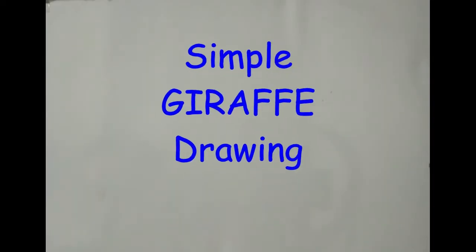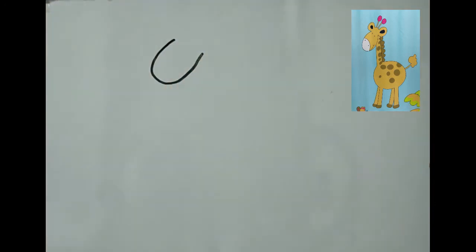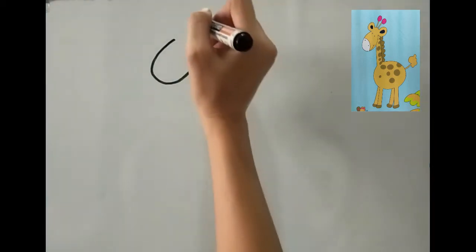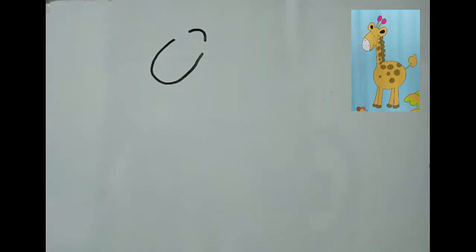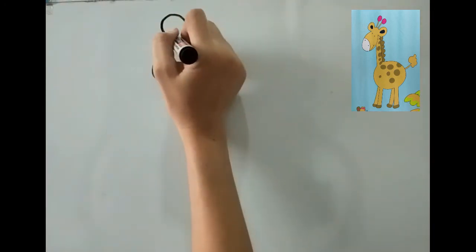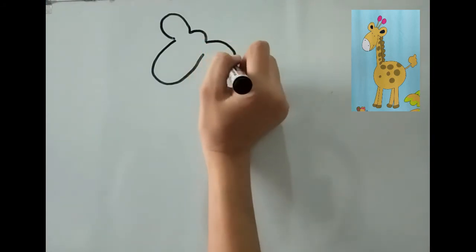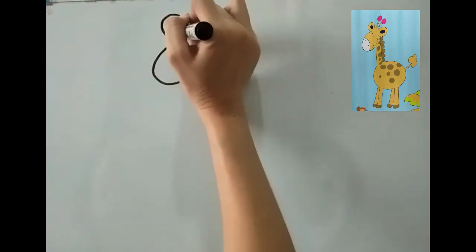So for the face, let's just make a tilted letter U or an opened oblong. Then let's just go up and down. Let's make the ears, just make oblongs, then let's make smaller ones here.